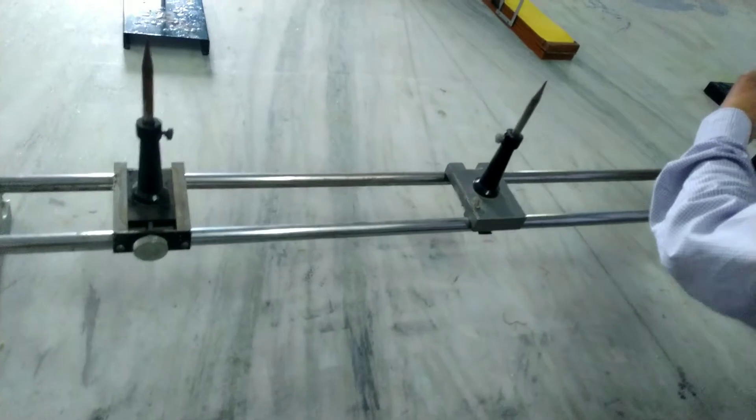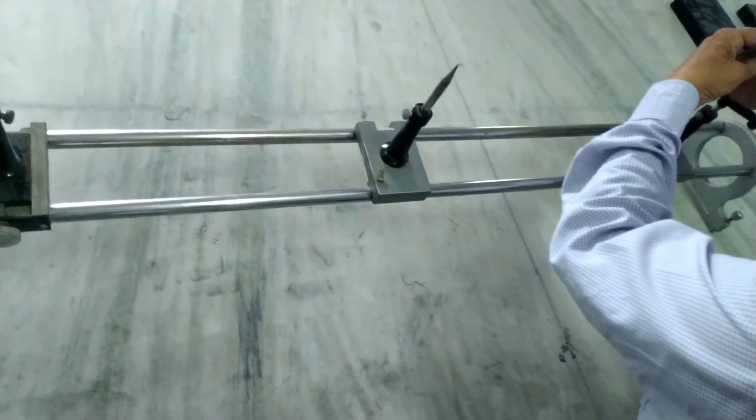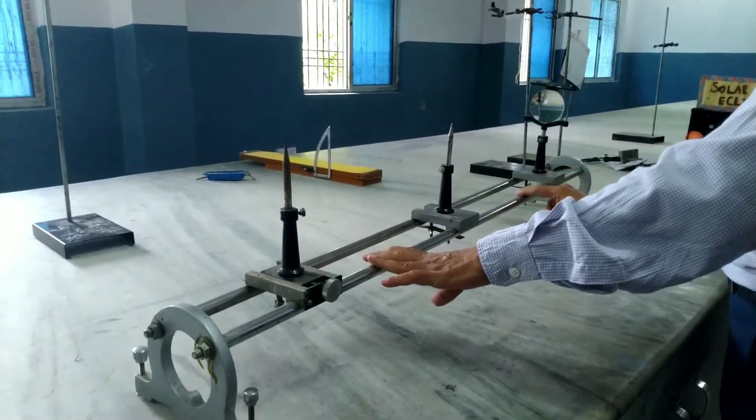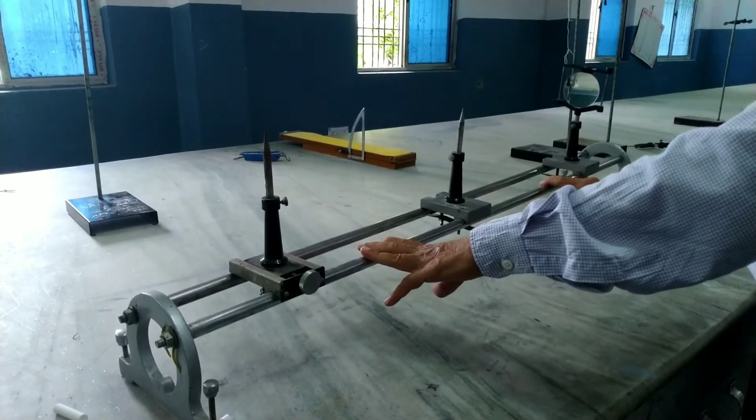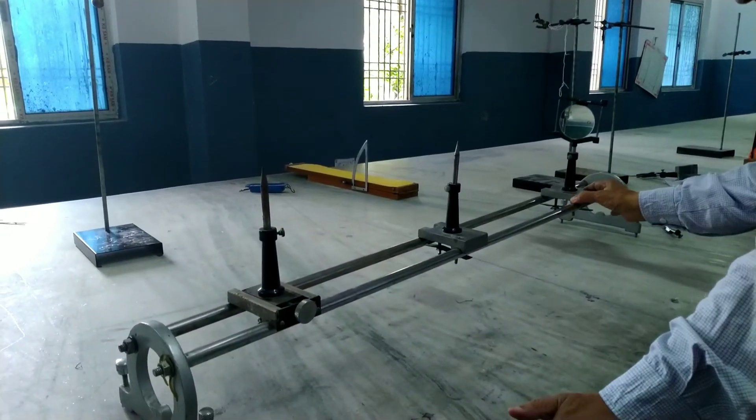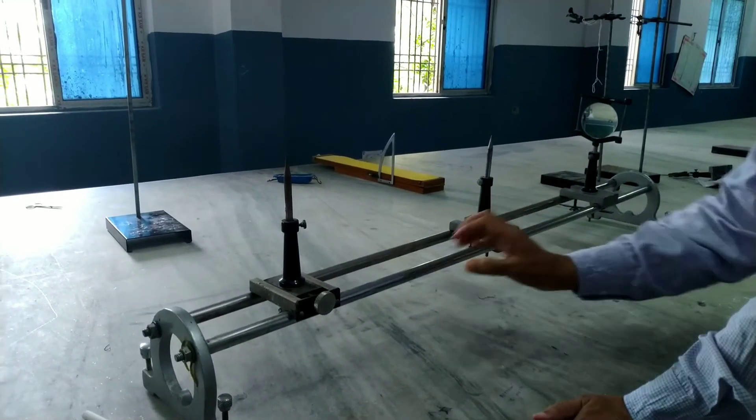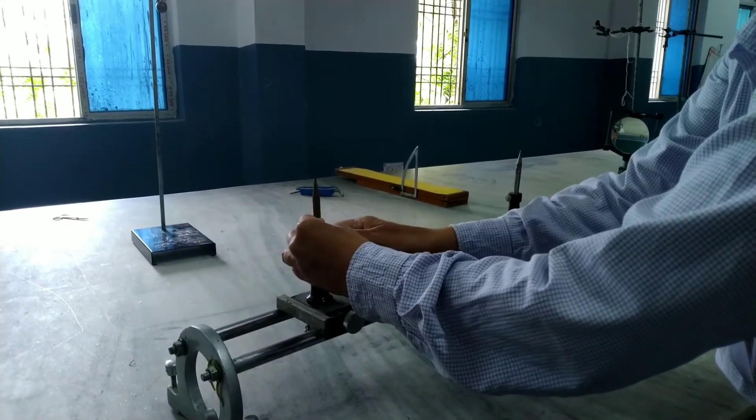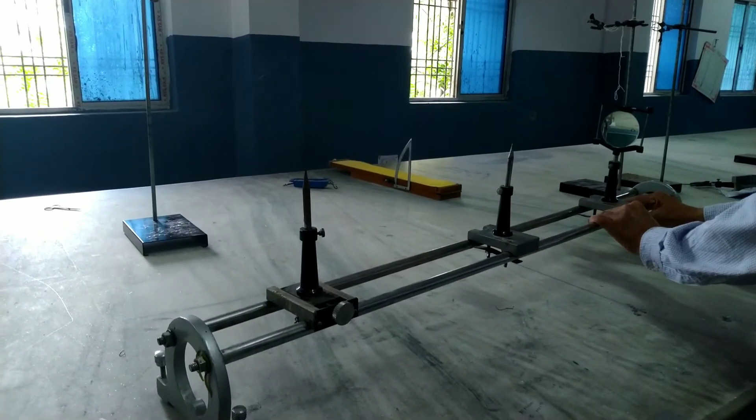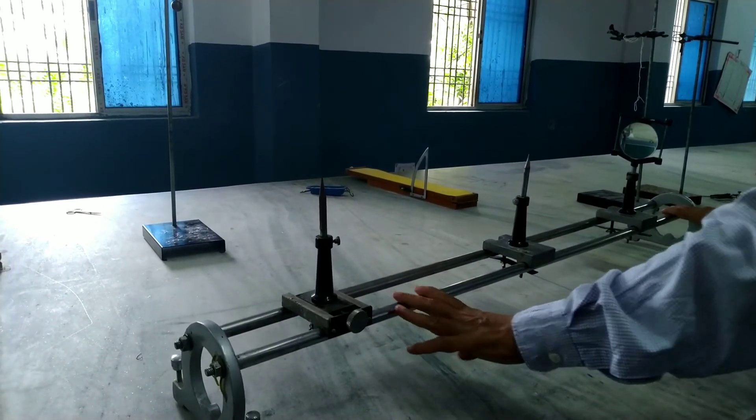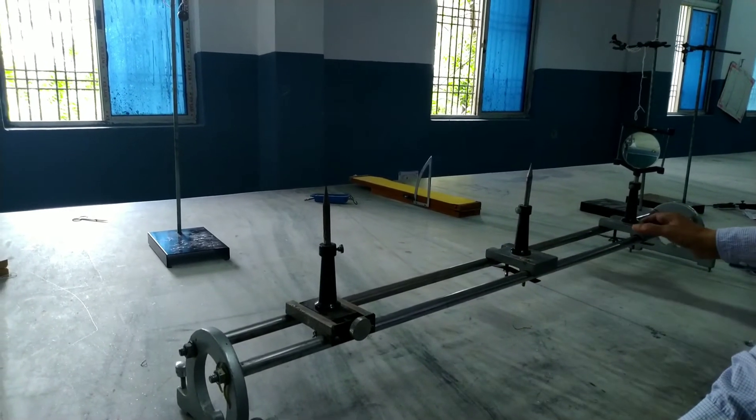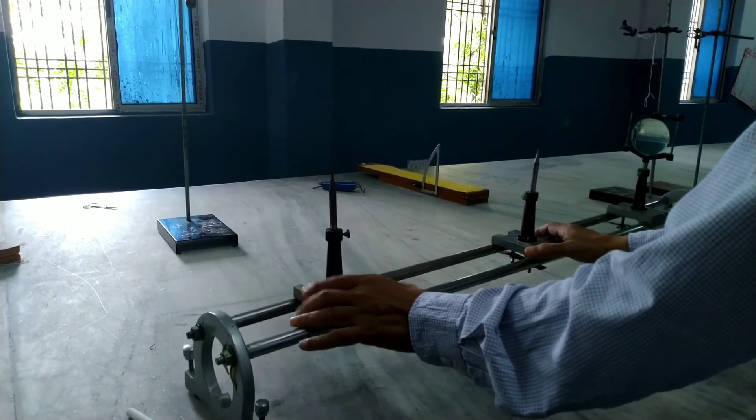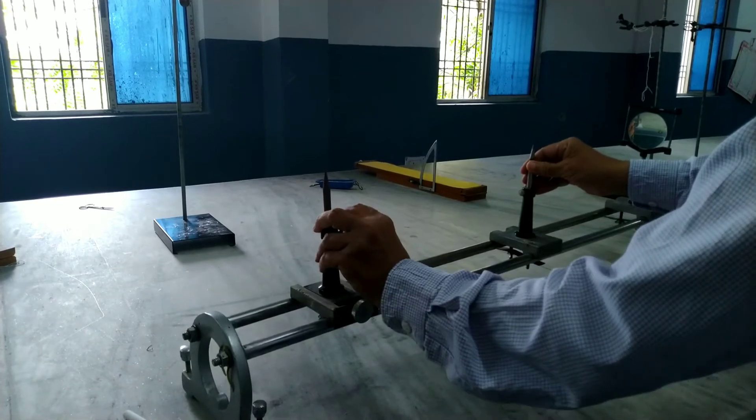First we adjust the concave mirror. Here we are using three uprights. While obtaining the rough focal length of the concave mirror, we are using the optical bench and the three uprights. It is the mirror holder and these two are for using pin holders.